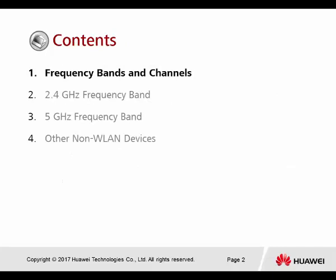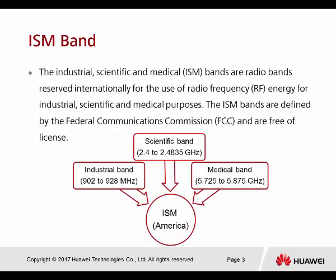Starting with the frequency band and channel — the ISM band. ISM stands for Industrial, Scientific, and Medical. This is one of the bands defined by the FCC. The industrial band ranges from 902 to 928 MHz. The scientific band covers 2.4 to 2.4835 GHz, which is the Wi-Fi 2.4 GHz band we currently use. The medical band runs from 5.725 to 5.875 GHz.